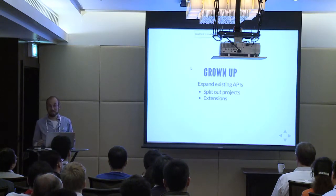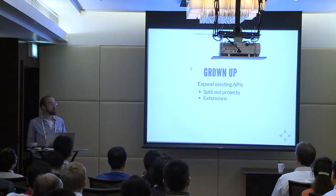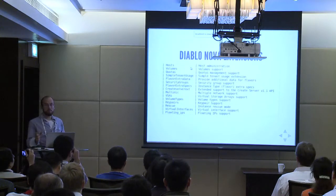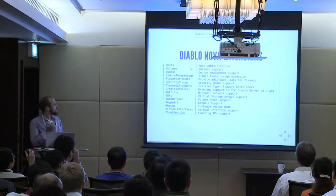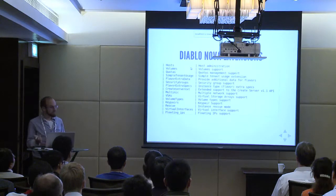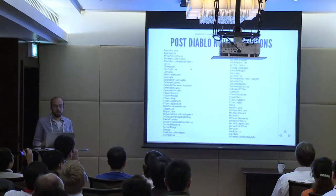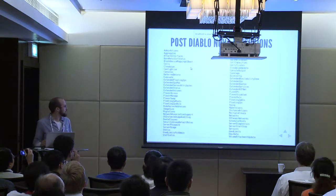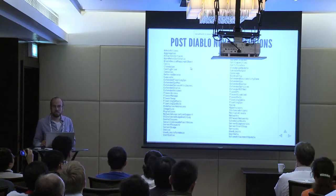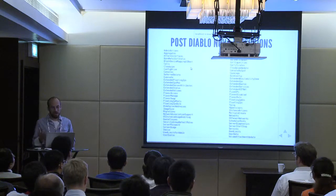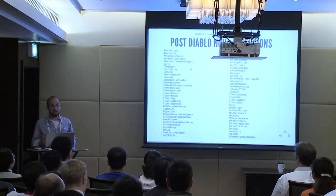We've also been adding extensions, so the API has been growing. Nova has been growing their API in huge amounts — we have a core API and extensions. Here's the list of all extensions in Diablo: not too many. And here's the list of all extensions added since Diablo — about 60 or so. We're really growing out the APIs in big ways.